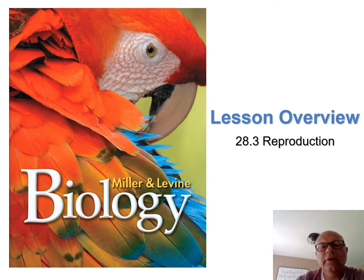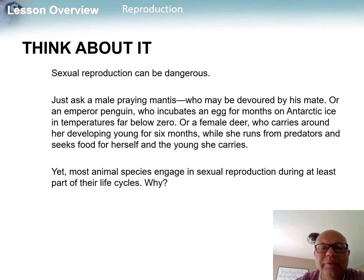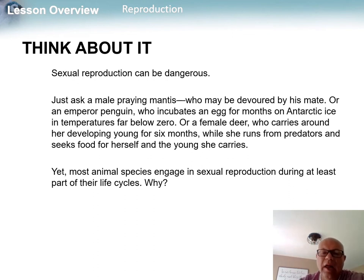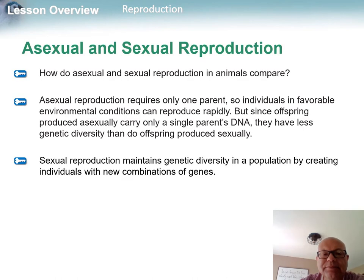This is video three on biology chapter 28, section three: reproduction in different animal species. We start with some interesting examples, noting that sexual reproduction can be dangerous — in the case of praying mantis, the female will kill the male after mating. There's some weird stuff with reproduction, so we're going to nail this down pretty well.